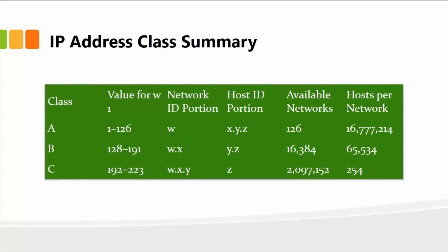Here's a summary of what we just talked about. We have class A, B, and C, and the grid provides the values for the network ID portion, the host ID, the available networks, and the hosts per network within each class. These are important basic concepts you will come across almost all the time. I hope this helps — let's move to the next lesson.